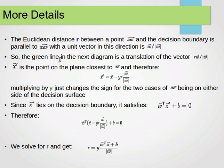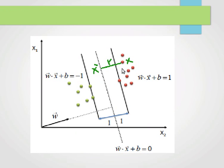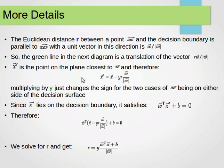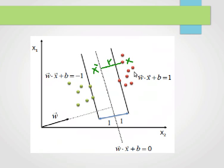If we look at the figure, the green line is just a translation of the vector r·w over the magnitude of w. If you find the distance between that point x and our plane, that vector and this vector are parallel, and the green line is just a translation of the value of distance r times w over the magnitude of w.